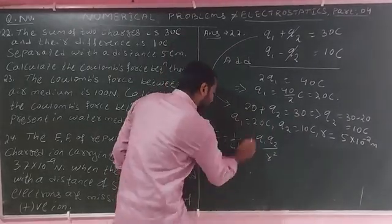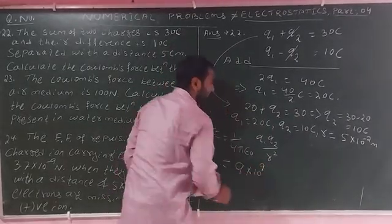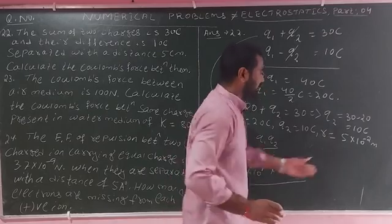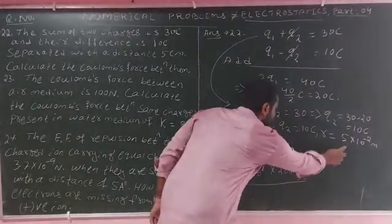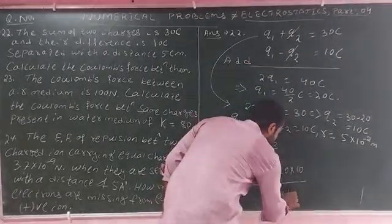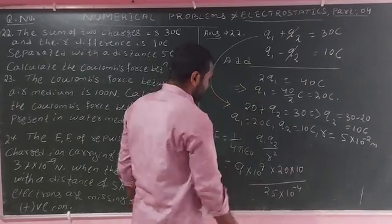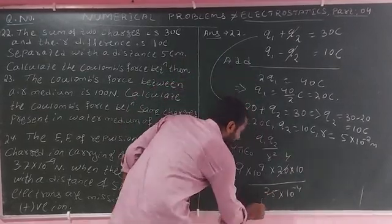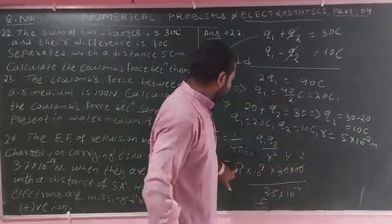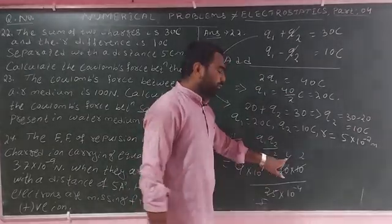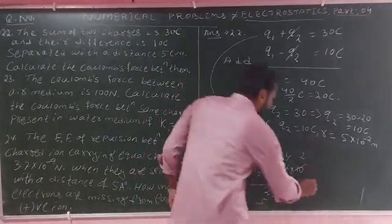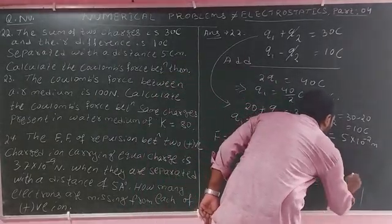Substituting values: 9 times 10 to the power 9, Q1 is 20 C, Q2 is 10 C, divided by R squared. R squared is 5 squared times 10 to the power minus 2 squared, giving 25 times 10 to the power minus 4. Computing: 9 times 20 times 10 divided by 25 gives 72, so the force is 72 times 10 to the power 9 newtons.